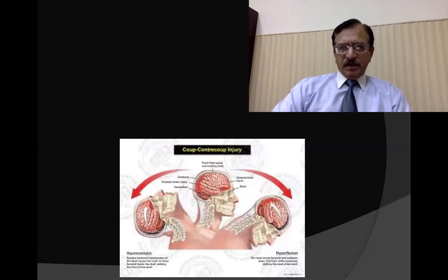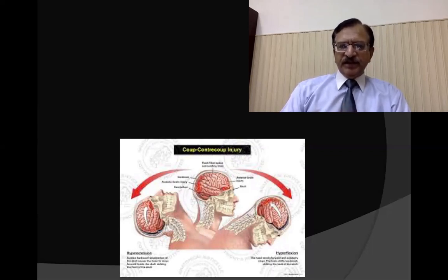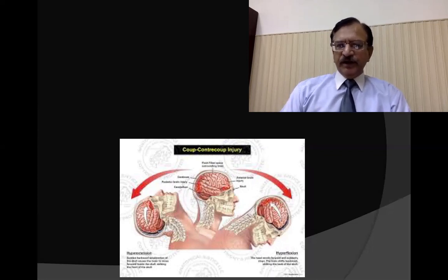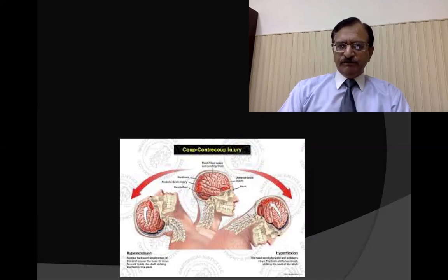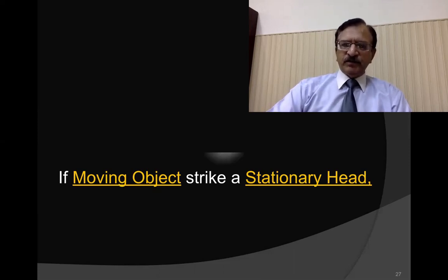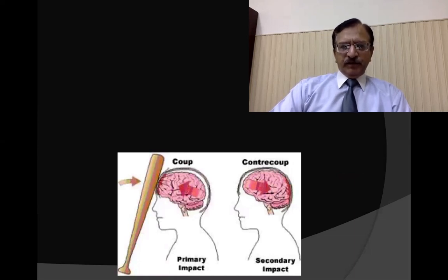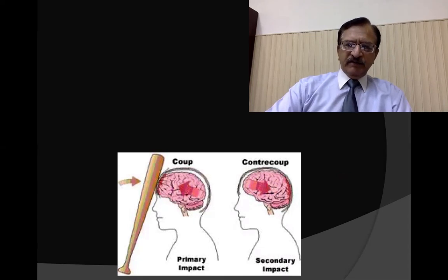Sometimes when the head is free to move, and it is hyperflexed, it strikes to the front, and when hyperextended, the occipital region strikes. A mixed picture of coup at the frontal point and at the occipital point can occur if the head is free to move. Additionally, if a moving object strikes a stationary head — for example, a baseball stick striking the forehead — that is the point of impact causing the coup injury, and with the jerky movement, the contra side shows the contra-coup injury.